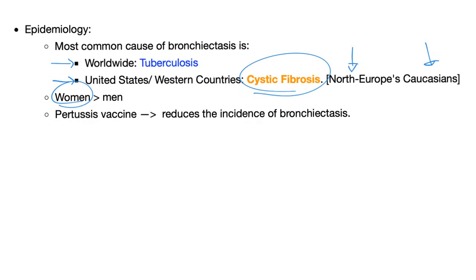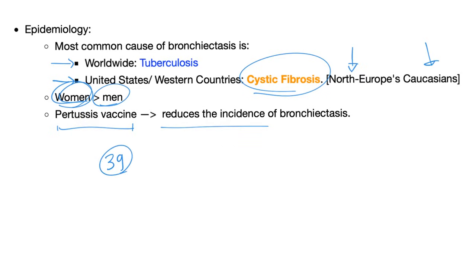The incidence of bronchiectasis is more common in women than men — not sure exactly why. The pertussis vaccine actually reduces the incidence, and this is one more reason why you should vaccinate your kids.